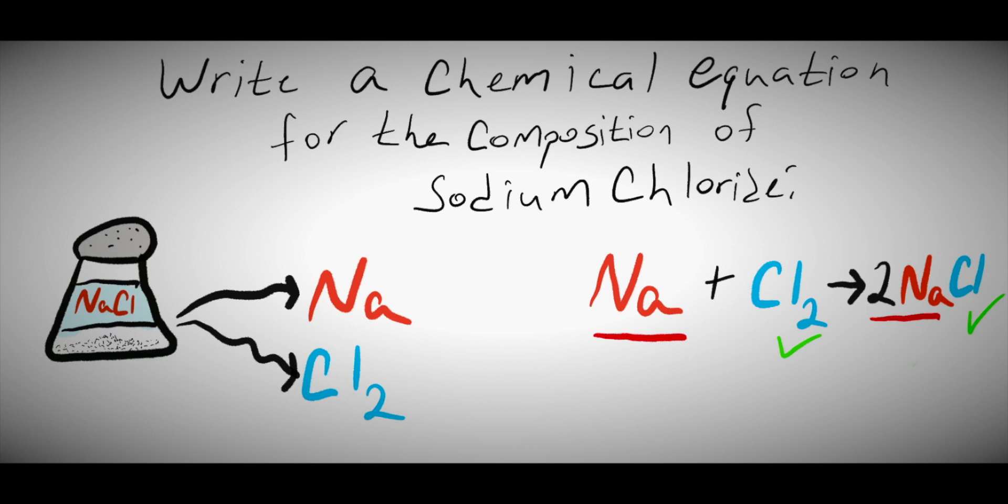Now, we have one sodium in the reactant side and two in the product side. In order to fix this problem, we have to add a 2 as a coefficient in front of the sodium atoms. Now, we can say that we're all balanced up and we can rewrite our equation. The composition of sodium chloride is 2 Na plus Cl2 yields 2 NaCl.